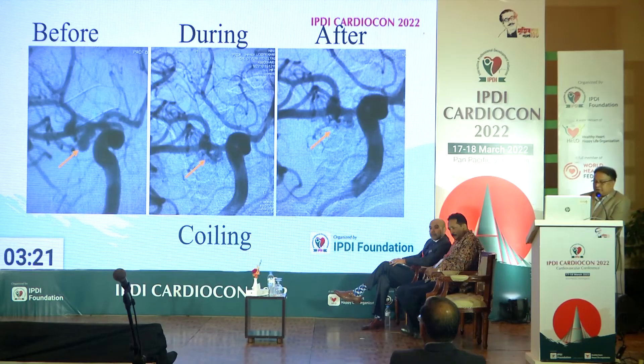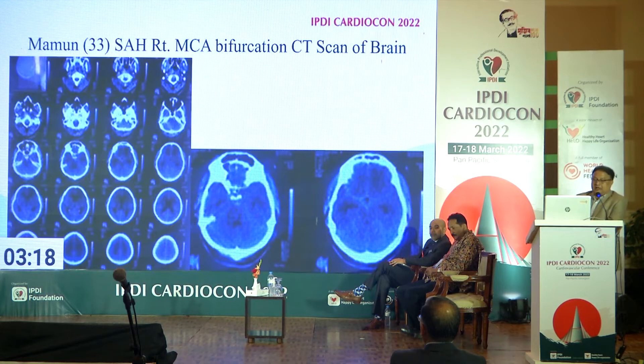This is how we perform the neurointerventional approach in cases of subarachnoid hemorrhage. Finally, we do a check to see whether any residual effect remains. You can see the glistening part, which is the coil — a very costly platinum wire coil. If you take a look: before aneurysm coiling, during, and after — you can see the aneurysm is totally obliterated from the circulation.